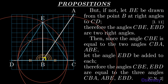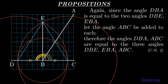Then since the angle CBE is equal to the two angles CBA, ABE, let the angle EBD be added to each. Therefore the angles CBE, EBD are equal to the three angles CBA, ABE, EBD, by Book 1 Common Notion 2. Again, since the angle DBA is equal to the two angles DBE, EBA, let the angle ABC be added to each. Therefore the angles DBA, ABC are equal to the three angles DBE, EBA, ABC, by Book 1 Common Notion 2.